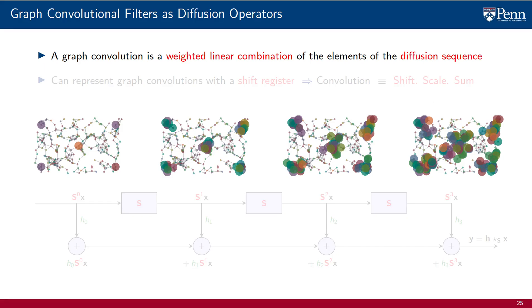From their respective definitions, we see that graph convolutions are a linear combination of the elements of the diffusion sequence. The latter, we recall, we can compute with matrix powers or with recursive application of the shift operator.